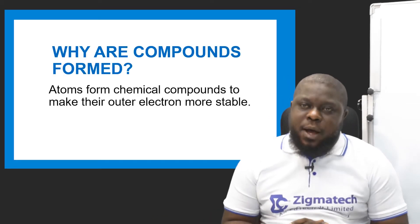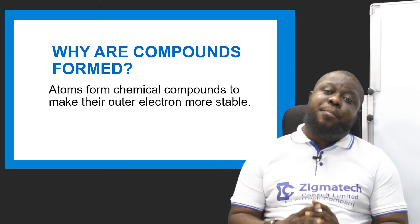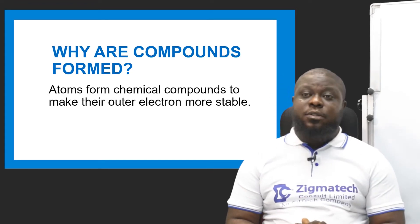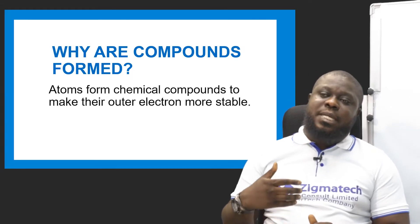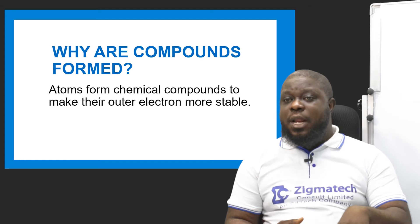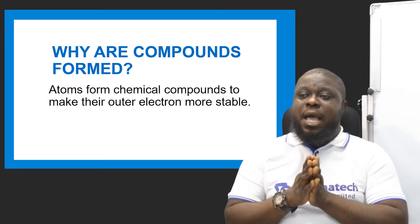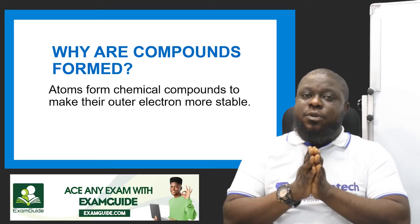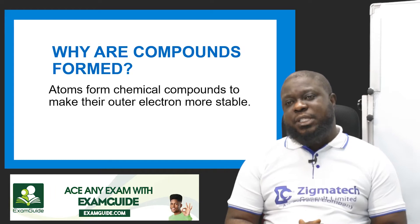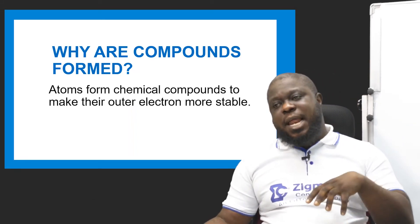Why are compounds being formed? Atoms form chemical compounds to make the outer electron more stable. We know that the electron is around the atom, found in the outermost shell — the valence orbit — and the electrons there are called the valence electrons. This is why compounds have been formed: so that the particular electron that has much energy and has been in motion will be stable. It is going to be shared from one element to another.